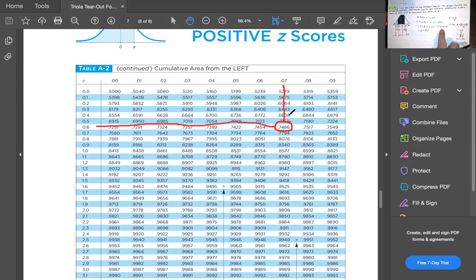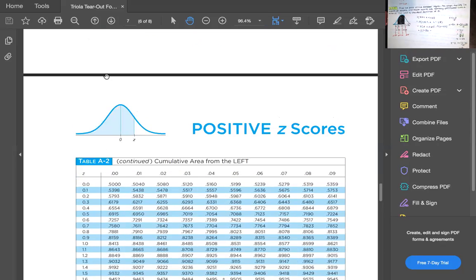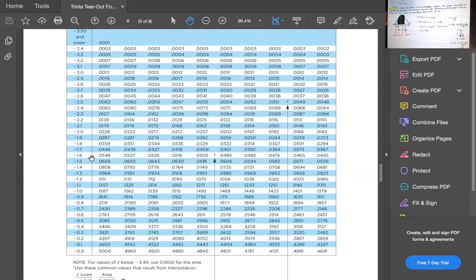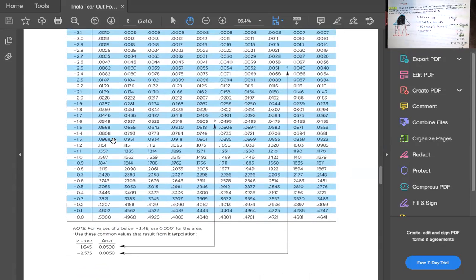And now we want to subtract the area to the left of z equals negative 1.33. So we'll go to the negative z-scores page, go to negative 1.3. So we're here. And then we look for negative 1.30, 1.31, 1.32, and 1.33. I will circle that. So that's that value right there. So you have 0.0918.